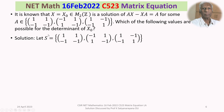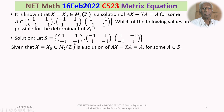Let S be the set consisting of those three 2×2 matrices. We are given X = X₀ ∈ M₂(ℤ), meaning entries come from the integers, and X₀ is a solution of the matrix equation AX - XA = A for some A ∈ S. That means X₀ must satisfy this equation, so AX₀ - X₀A = A. Our first task is to determine for which A this is true.